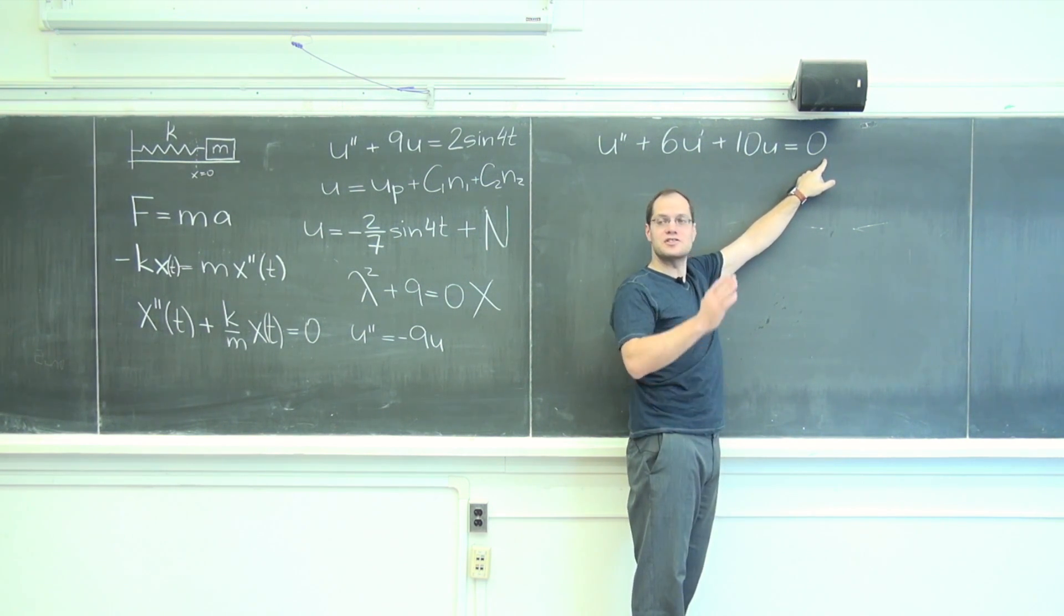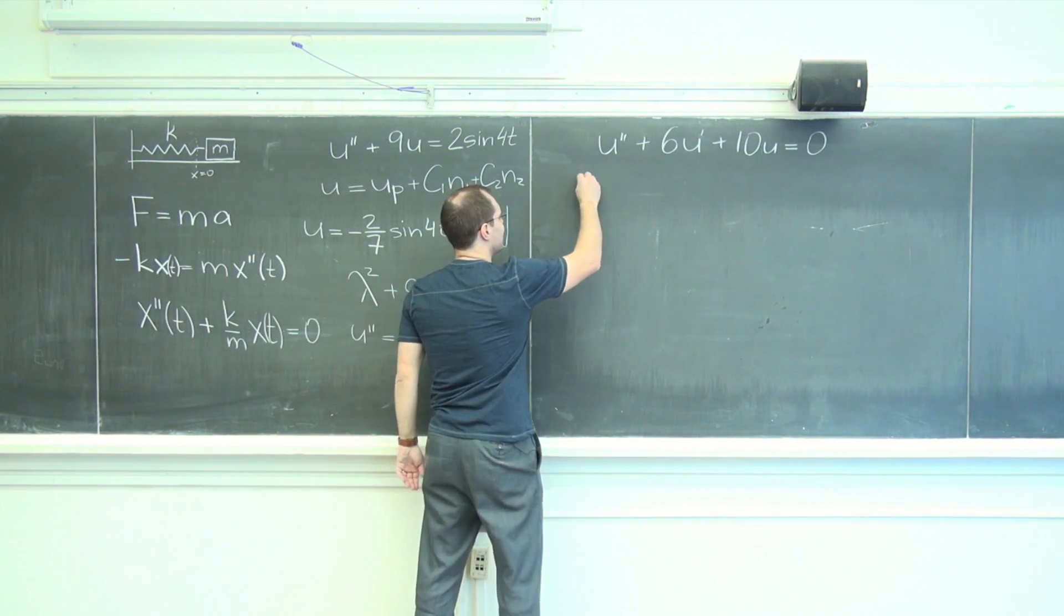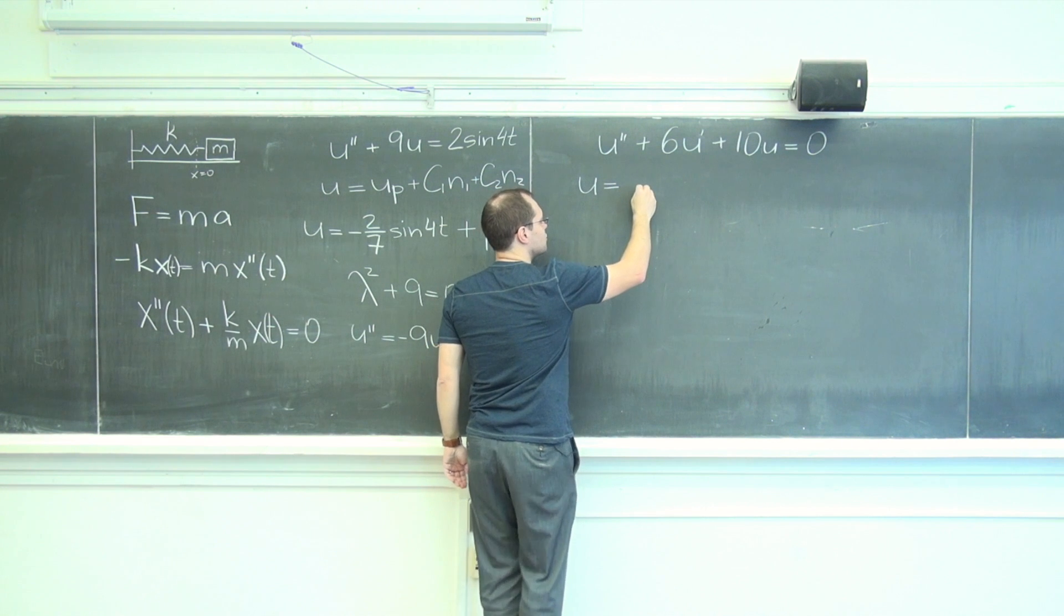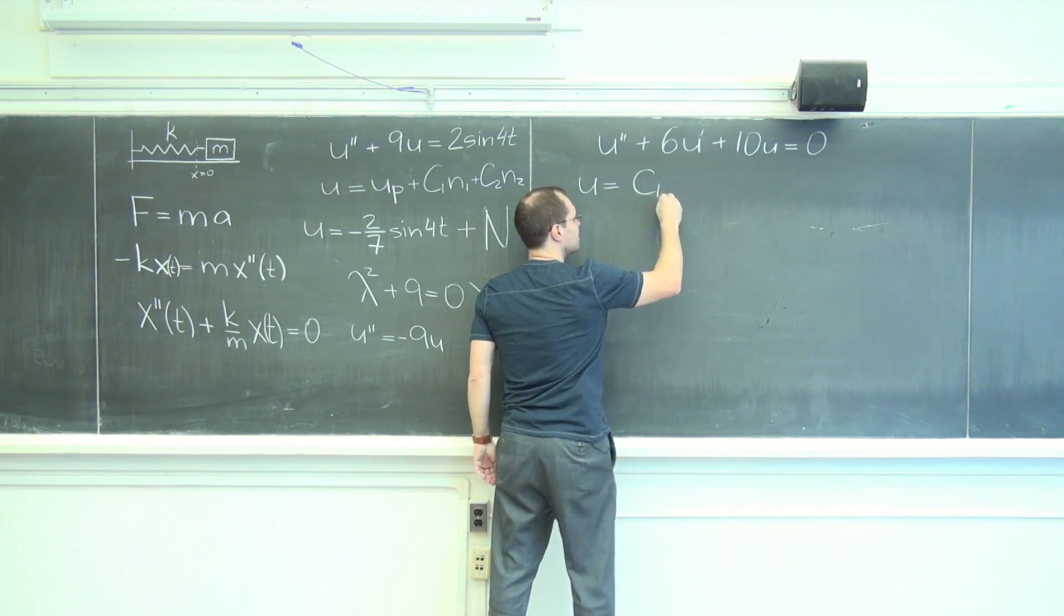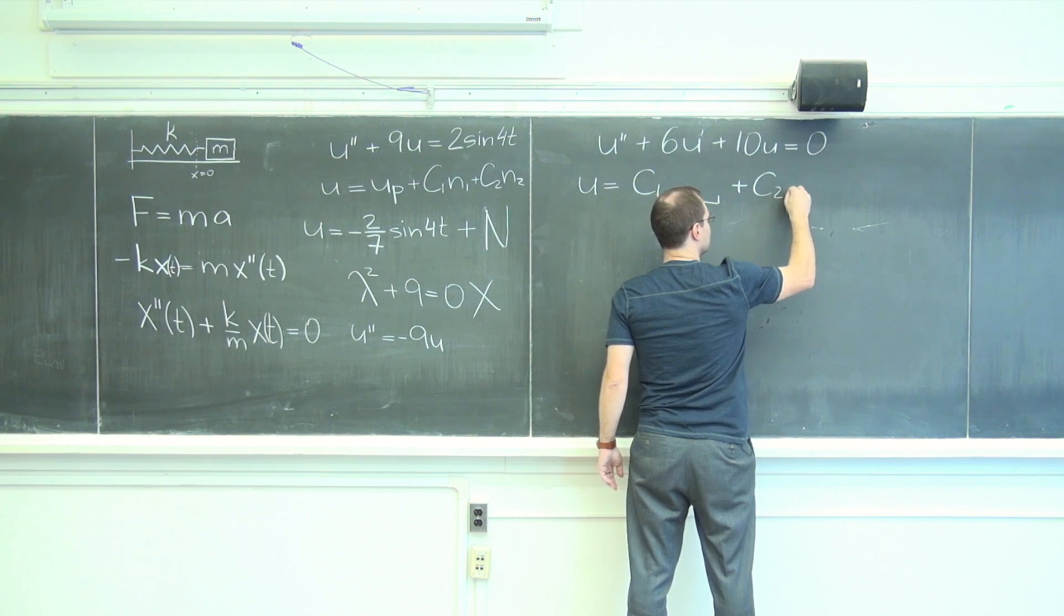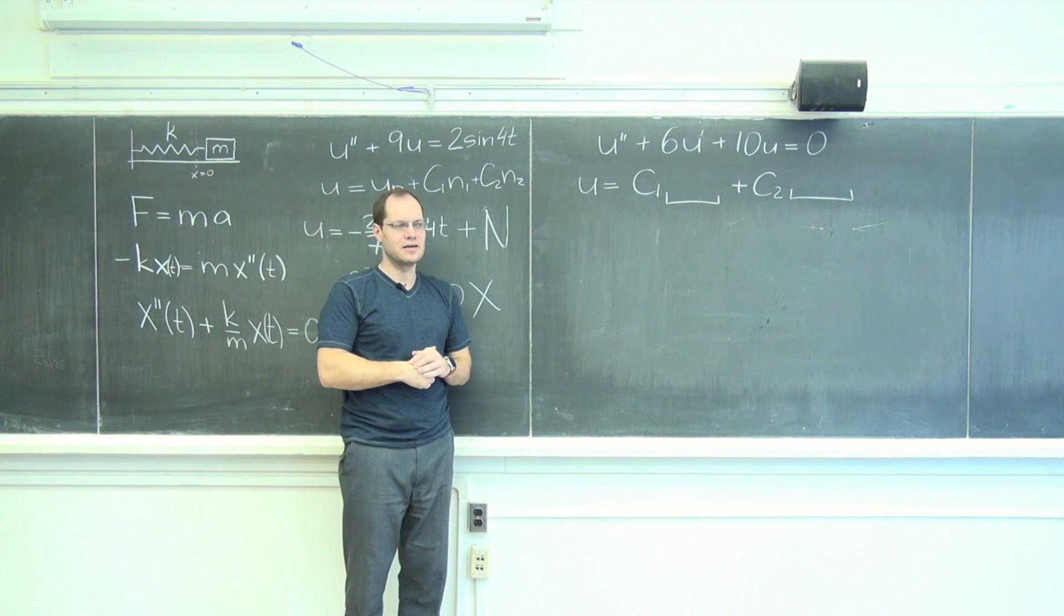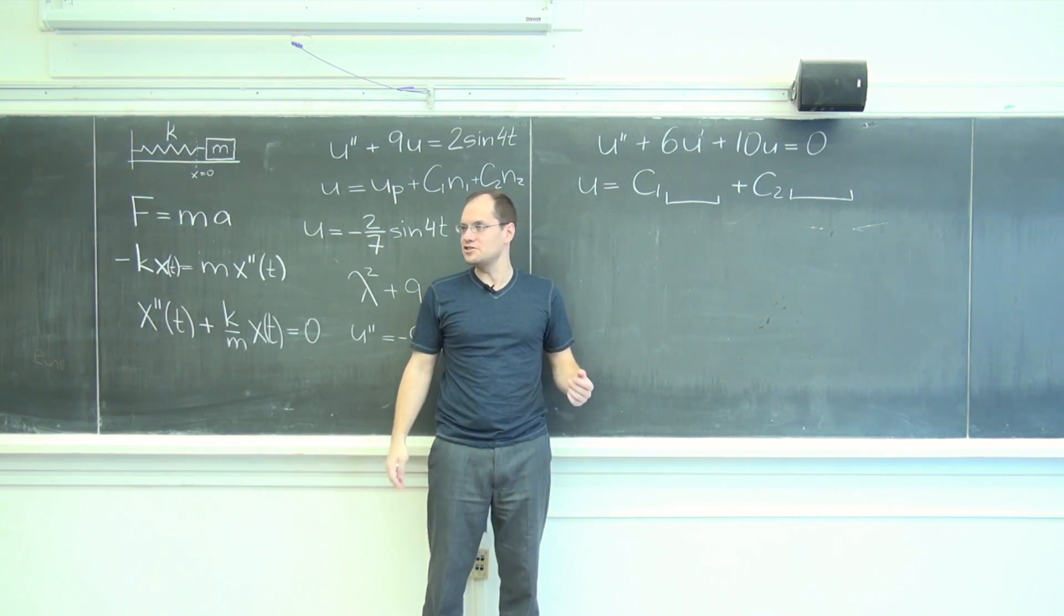So we can focus on the roots and not so much on the particular solution. In this case, the general solution will be just the null space: c1 times something plus c2 times something else. This is what the general solution will look like because it is a homogeneous equation.